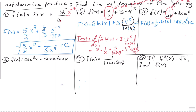Number 4 is easy — you just have to remember the anti-derivatives. What's the anti-derivative of cosecant squared x? Negative cotangent x. And what's the anti-derivative of secant x tan x? Secant x — so it would be minus secant x. Plus C. Don't forget your plus C.